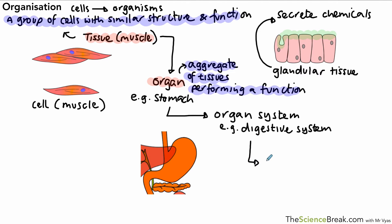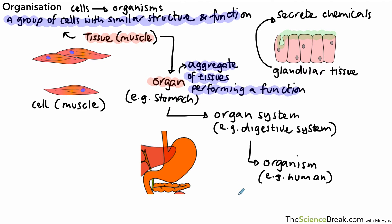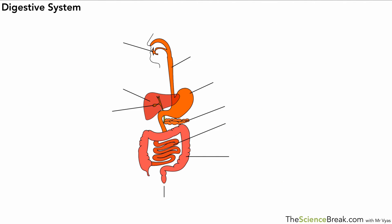If we then get lots of systems working together, that builds up to the whole organism — for example, a human. So we've got organ systems working together to make the organism. We've now built up from cells all the way to the whole organism.